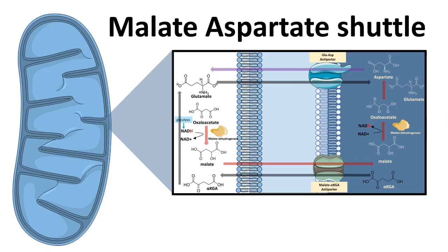In this video we are going to talk about the malate-aspartate shuttle system. As the name suggests, it's a shuttle system which would shuttle malate and aspartate across the mitochondrial membrane. Let's put this in a physiological context to understand the necessity of this shuttle system and how it operates at a molecular level.